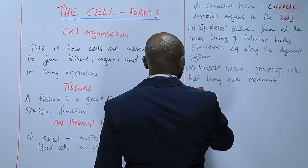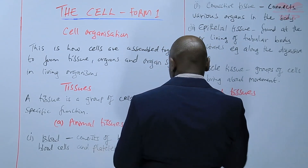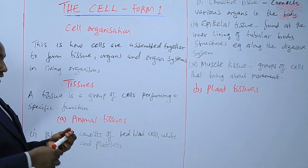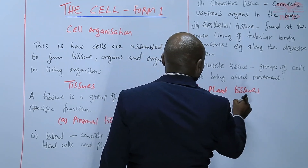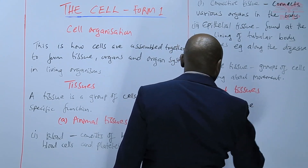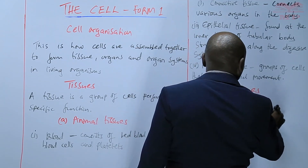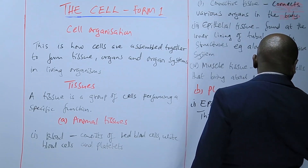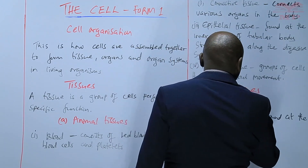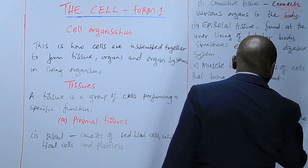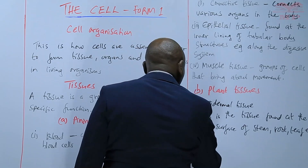Now let's go through various examples of plant tissues — tissues that are found in plants. Plant tissues include, first, epidermal tissue, which is the tissue found at the outer surface of the stem, root, leaf, etc.